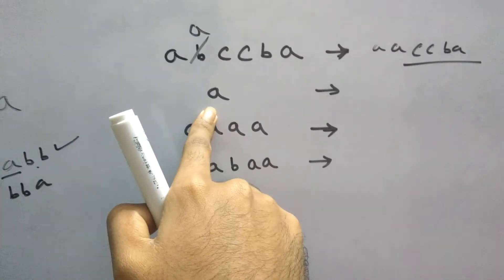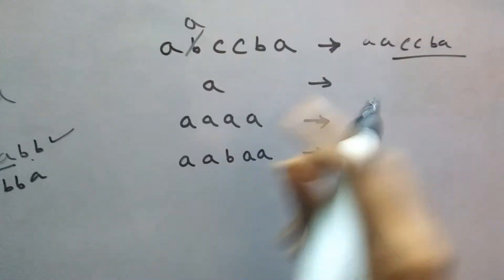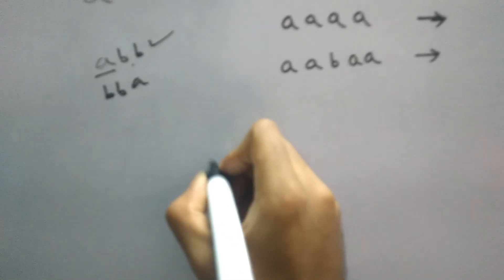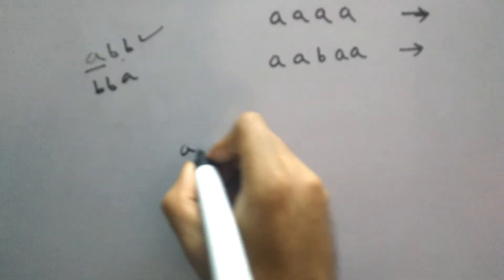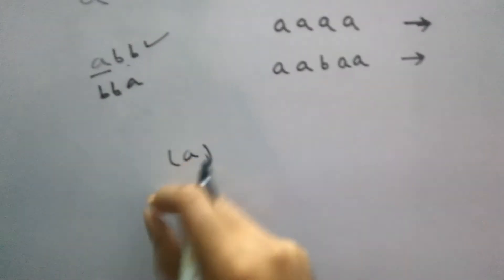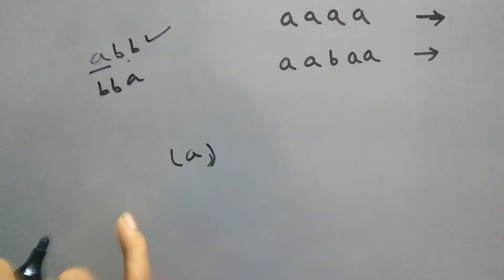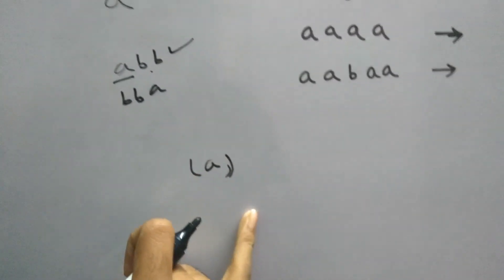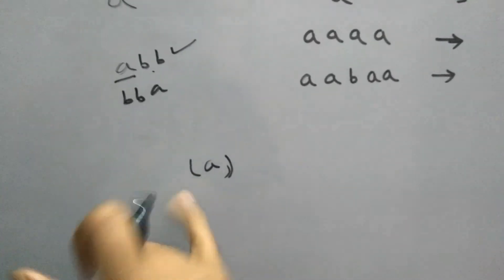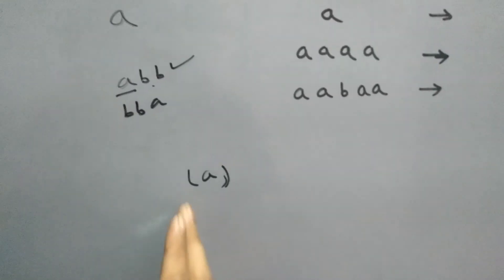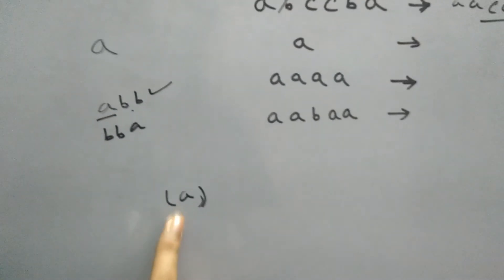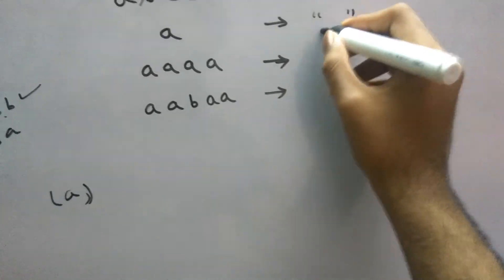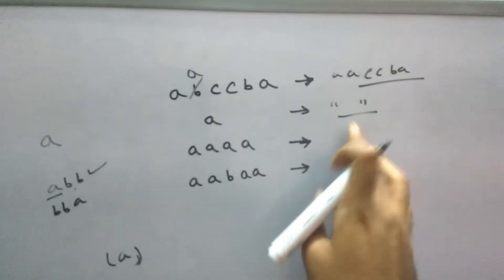For the edge case where there is only one character: a single character is itself a palindrome from both sides. No matter what we change it to, it will always be a palindrome. So for this sort of example the answer should be an empty string — it is non-breakable.